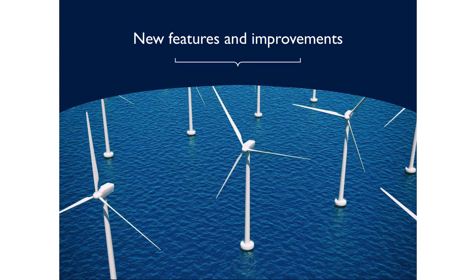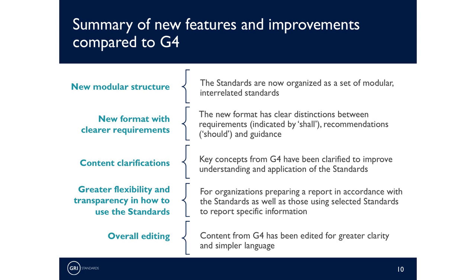In this section, we will talk about the new features and changes compared to G4. First, as we mentioned earlier, the most noticeable change is that content is now organized into numerous modular standards, rather than being consolidated into a single document. Second, we have clarified in each standard which content is a requirement and which content is a recommendation or guidance. This makes it much easier for reporters to understand which instructions are mandatory for preparing an in-accordance report. All requirements are denoted with the use of the word 'shall' and bold font. All recommendations are denoted in separate sections using the word 'should.' In addition, a number of key concepts from G4 have been clarified in the standards, based on our ongoing monitoring and stakeholder engagement process with G4 users. These important clarifications will enhance the consistency and quality of reporting.